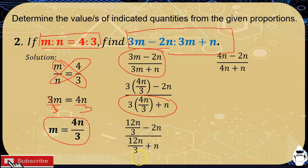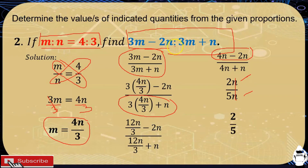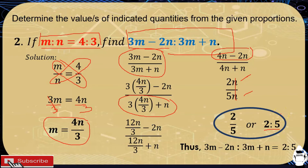Continuing to simplify: 12n over 3 is 4n, so the numerator is 4n minus 2n which equals 2n. The denominator is 4n plus n which is 5n. Then 2n divided by 5n — the n cancels since it equals 1 — so the ratio is 2 over 5. Therefore, the ratio of 3m minus 2n is to 3m plus n is 2 over 5, or 2 is to 5.